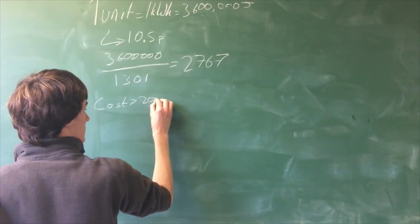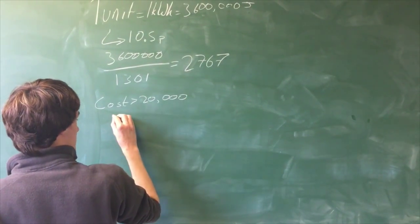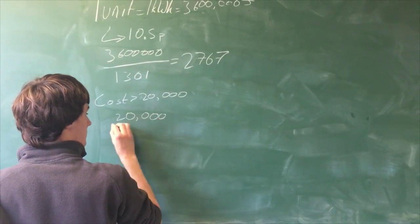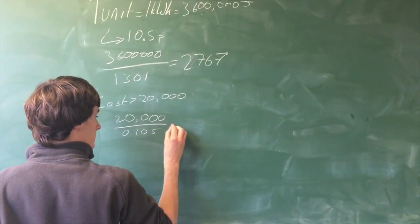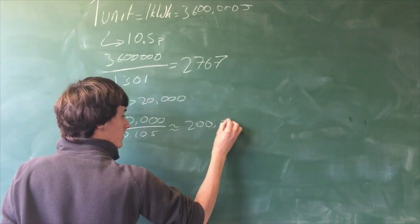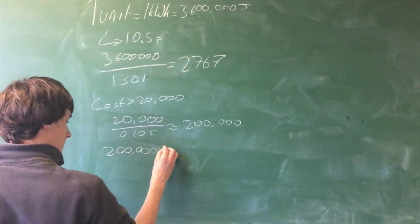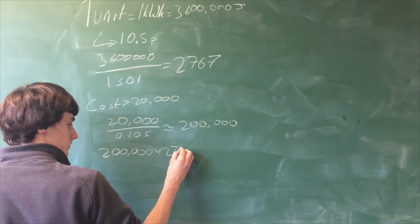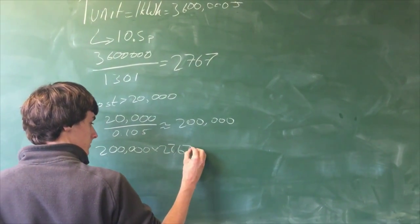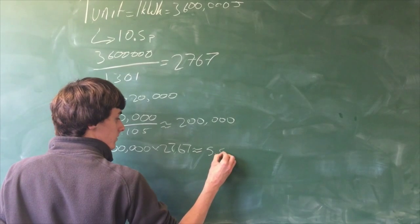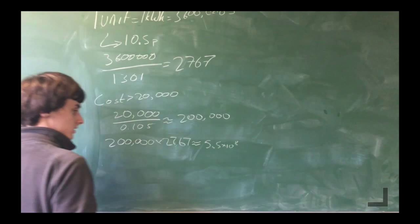The cost of a speed bump would be a minimum of £20,000. This means to cover the cost of the speed bump, it would have to produce around 200,000 units of energy. Because 2,767 cars produce one unit of energy, 5.5 times 10 to the 8 cars would be required to produce 200,000 units. So 5.5 times 10 to the 8 cars would be required to drive over one speed bump just to cover the cost of one speed bump.